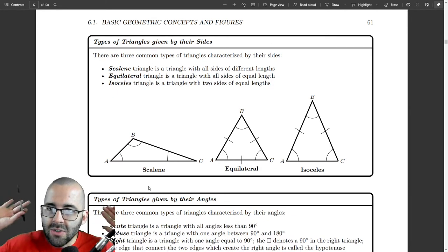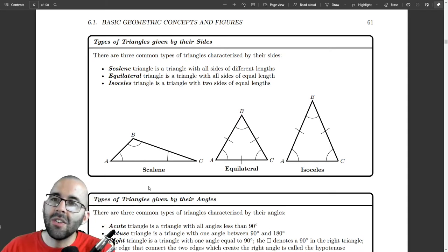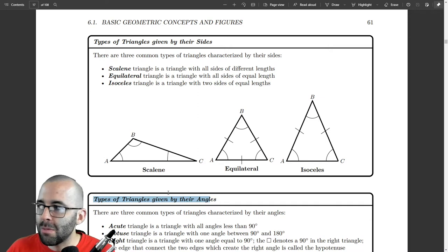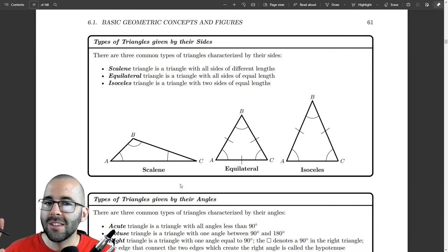We sometimes classify triangles by their sides, and we also sometimes classify triangles by their angles. And sometimes we do both. So we've got two sets of definitions for triangles: scalene, equilateral, and isosceles.